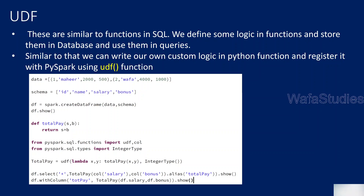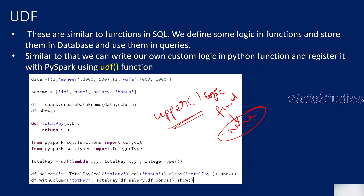So firstly, what is UDF? UDF stands for user-defined functions. In simple words, let's say you have some logic — you can write that logic as a Python function and register it with some function name. Once you register it, you can use that function name as if you are using built-in functions. For example, in our past videos we used the upper function, which is built-in inside the PySpark library to convert column data into uppercase. For that upper function, we are not writing the logic — someone already wrote it and it is available as a function for you to use.